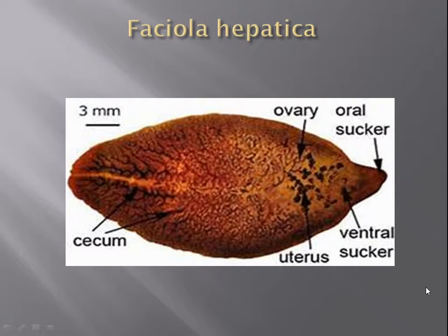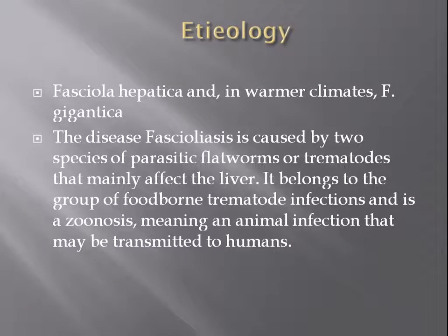This picture is describing the etiological agent that causes fasciolosis in animals — mostly cattle, cow, and small cattle like sheep or goat. Two important agents: Fasciola hepatica and, in warmer climates, Fasciola gigantica cause this disease. The disease fasciolosis is caused by these two species of parasitic flatworms or trematodes that mainly affect the liver. It belongs to the group of foodborne trematode infections and is a zoonosis, meaning an animal infection that may be transmitted to humans.